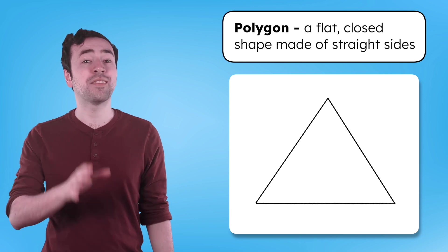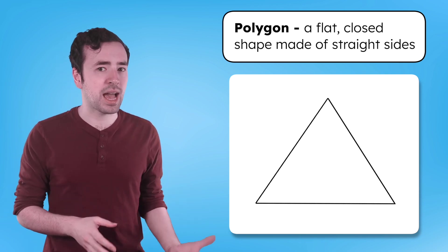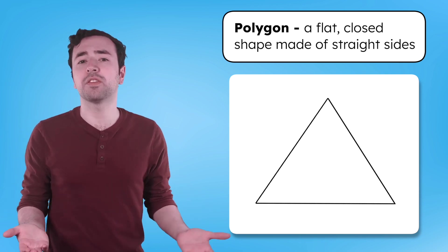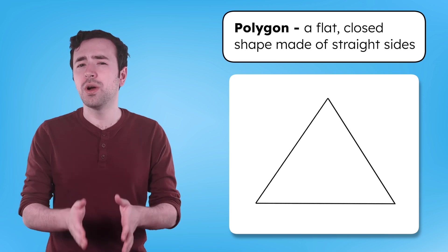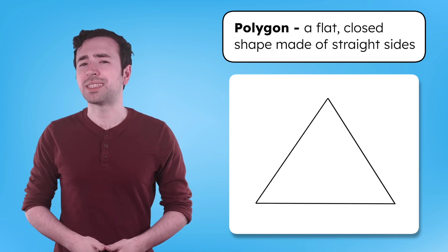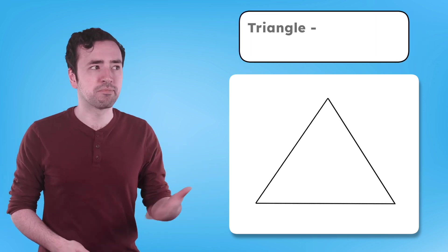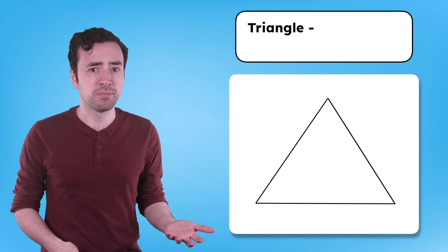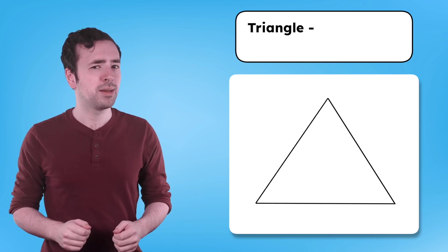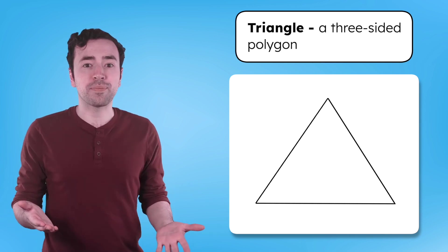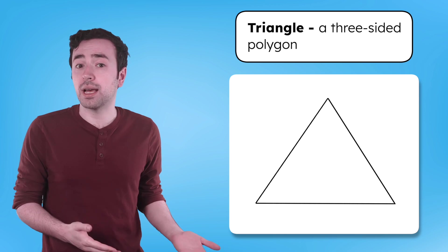Polygons have specific names based on how many sides they have, and the names of a polygon can give us a clue about how many sides it has. This one's probably familiar — it's a triangle. What does "tri" mean? It means three, and a triangle has three sides.